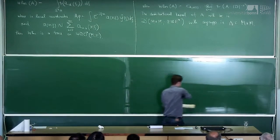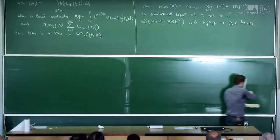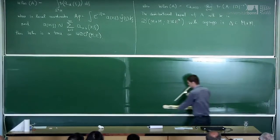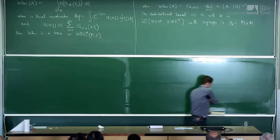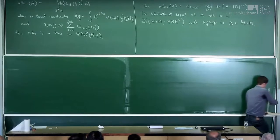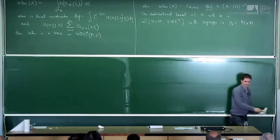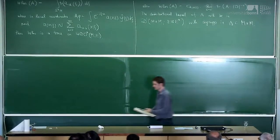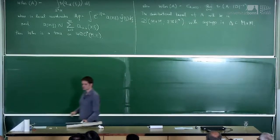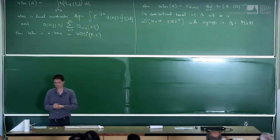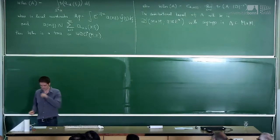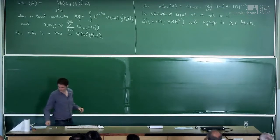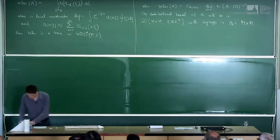In quantum mechanics, but also in non-commutative geometry, we know that what is important is not vector spaces but algebras. So why do we care about vector bundles? We should care about bundles of C-star algebras.